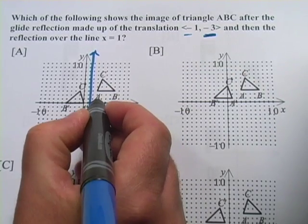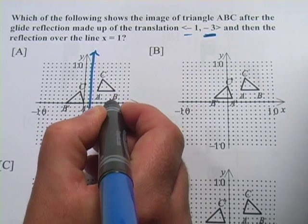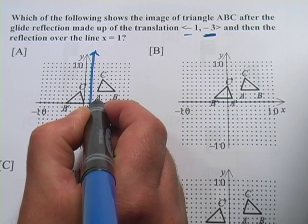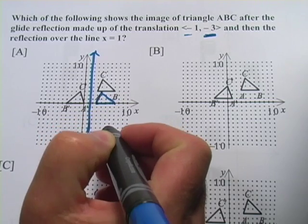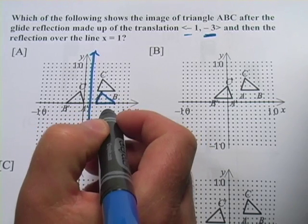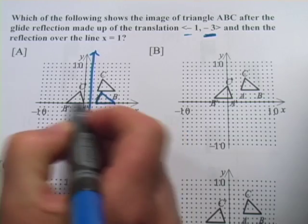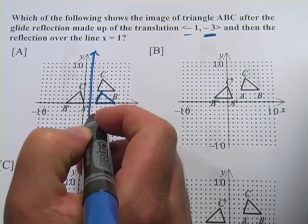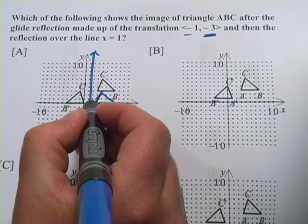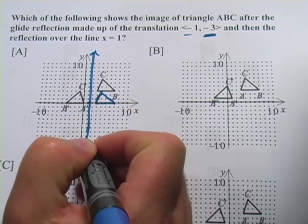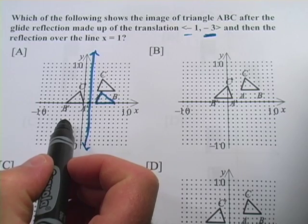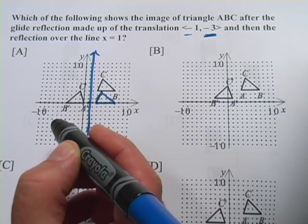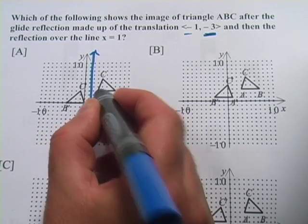And then once we've got it down there, so let's go ahead and just draw that. Something like that. Once we've got it down there, you want to make sure it's the same number of spaces away on either side of this line of reflection. And on this side, it's one, two spaces away. And on this side, it's only one space away. So we would need to move it one closer. And if we did that, it would be right there.